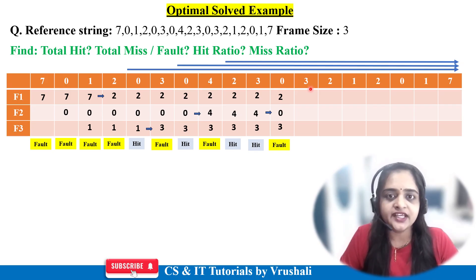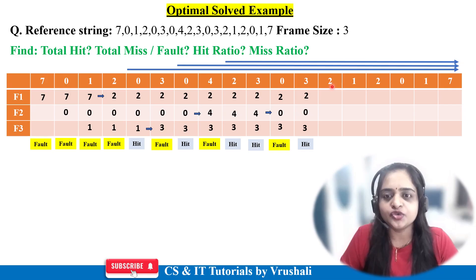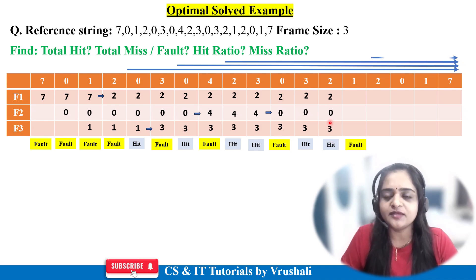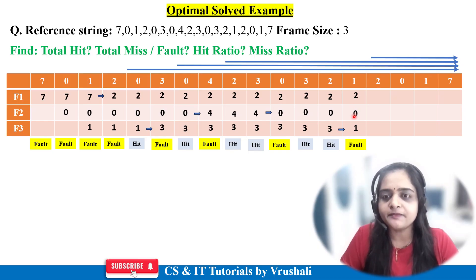Next, the CPU demands page 3 — already present in main memory, so page hit. Write down 2, 0, 3 as it is. Next, the CPU demands page 2 — already present in main memory, so page hit. Write down the data as it is. Next is page 1 — not present in main memory, so page fault. Check the future reference page: frames hold 2, 0, 3. After page 1, looking ahead: 2 is present, 0 is present, but 3 is not available in future. So replace page 3 with page 1 and keep remaining data as it is.